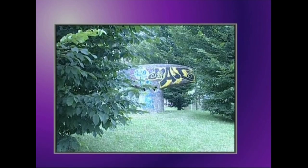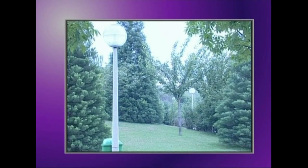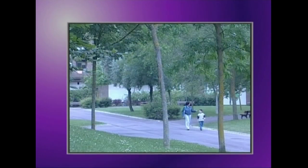Eguzkiak argiztatzen duen toki bat, ateratzeko, tunstenozko argiez erabili ohi behar den pelikula erabiltzen badugu, tonu urdinak dauzkan argazkia lortuko dugu, edo beste modu batera esanda, tonu hotzak dauzkan argazkia lortuko dugu.